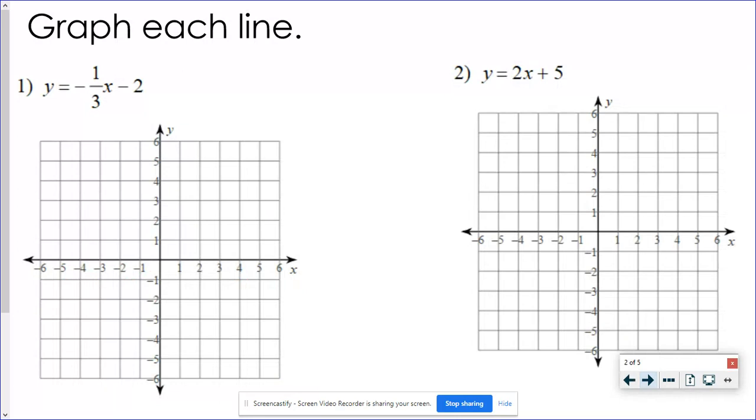Remember, if you have slope-intercept form, it's going to look like this: y equals mx plus b. The b is the y-intercept. That's where you begin on the y-axis. The m is your slope. That's how you move to get to the next point.